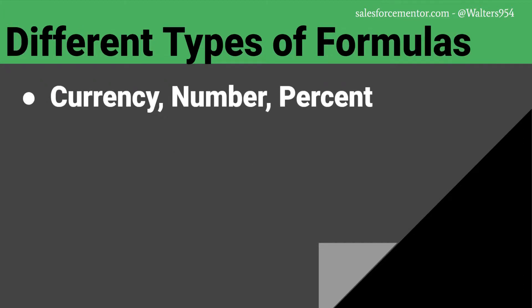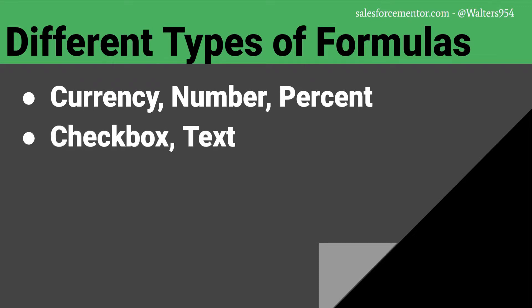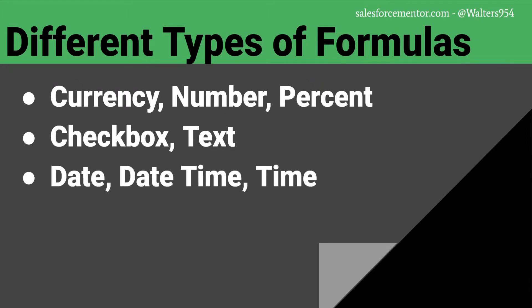There are a few different formula field types. The type of calculation that you're doing dictates your formula return type. If you want to display a rep's commission on a sale, you'll most likely be using a numeric return type like currency. If you don't need the dollar sign in front of that, use the number return type. Use the checkbox return type to evaluate true and false expressions, and text to display information. There are temporal return types as well for time calculations, but watch out for those time zones.